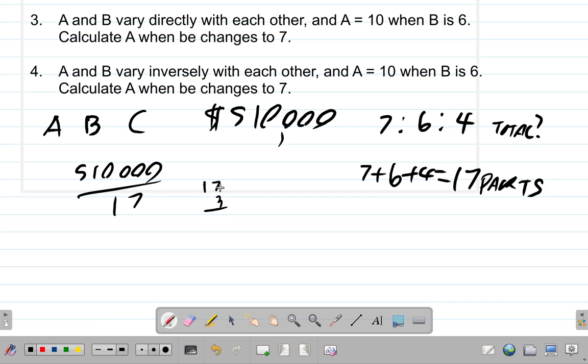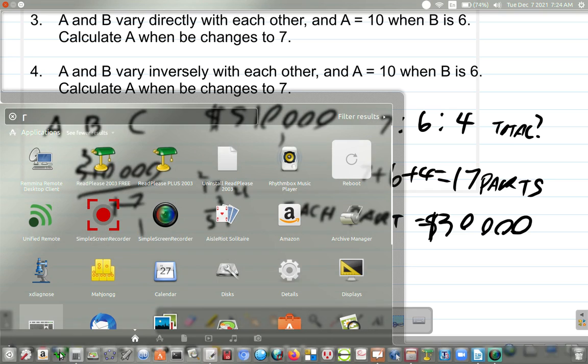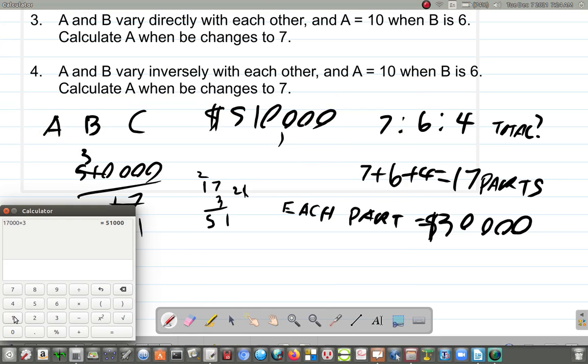17 times 3, 3, 7, 21, bring down the 1, carry 2, 3, 1, 3, 4, 5. 17 into 17 goes 1 times, 17 into 51 goes 3 times, and then you have the 1, 2, 3, 4, 0s. So what you have is 30,000, right? So each part equals 30,000. 30,000, so that if you multiply 30,000 by 17, you should get back 510,000, good.